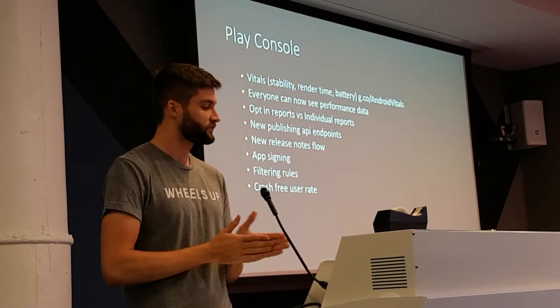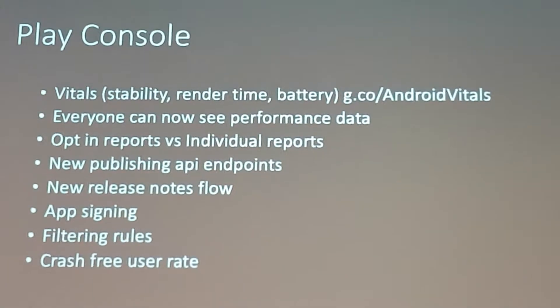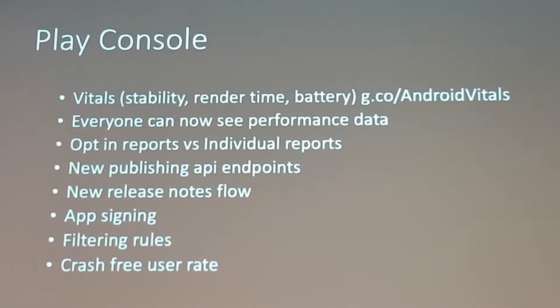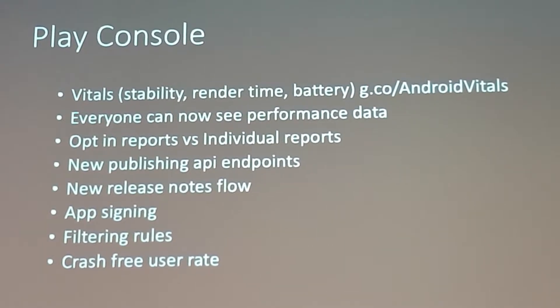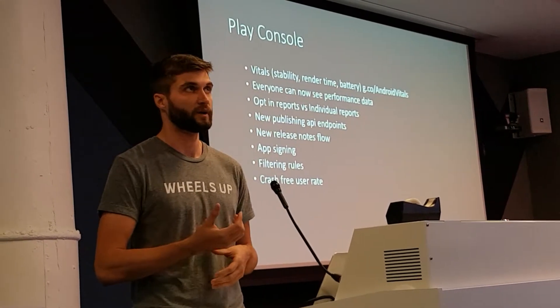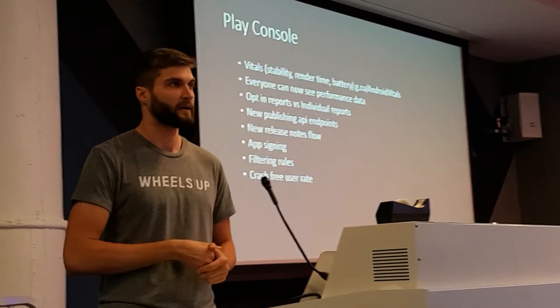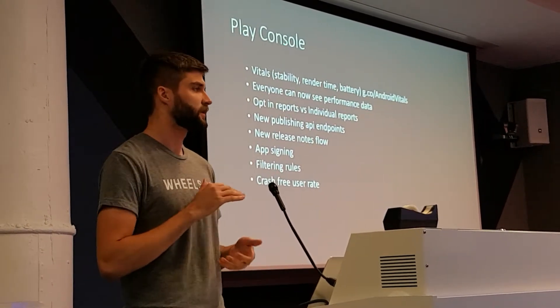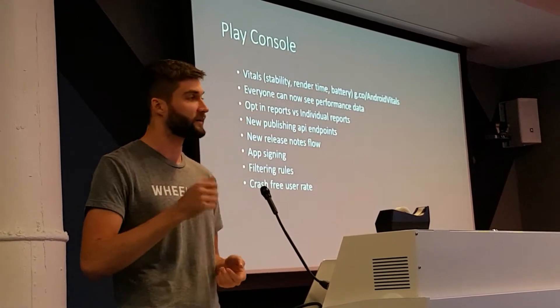Play Console vitals gives you three categories: stability, render time, and battery performance. You don't have to do anything to your application — it'll start scanning and collecting data. If it sees you have a ton of issues with frame rate, it'll report you. If you're in the lower 25% for crashes or something, you'll get flagged as well.